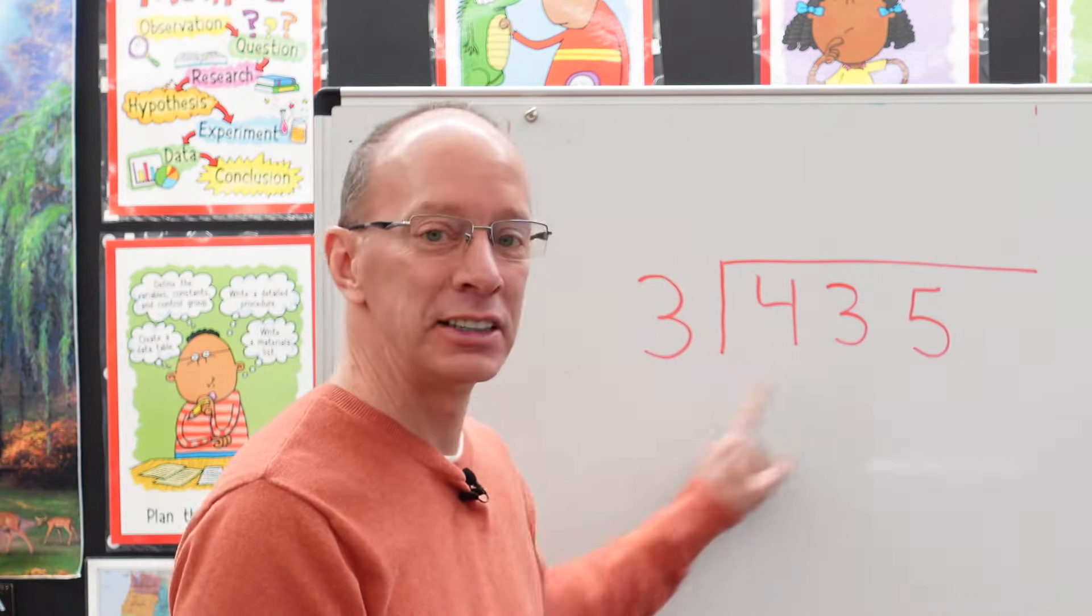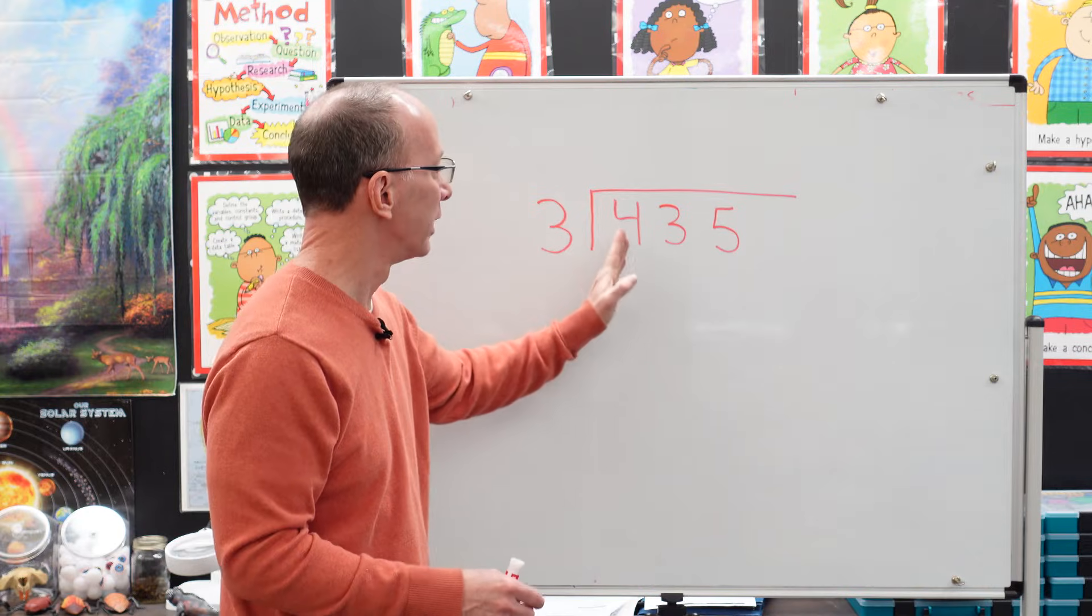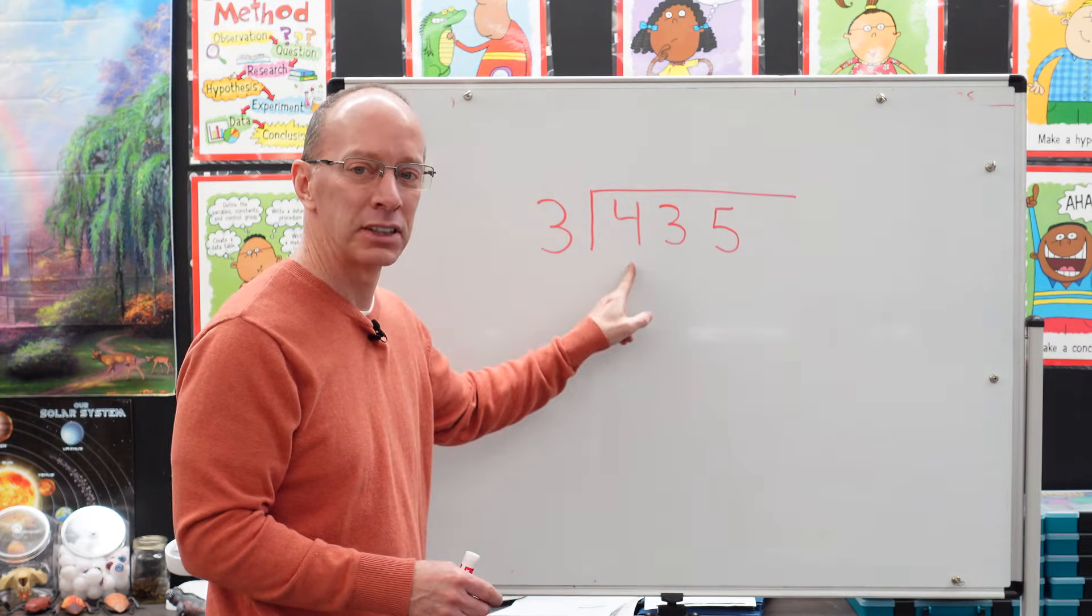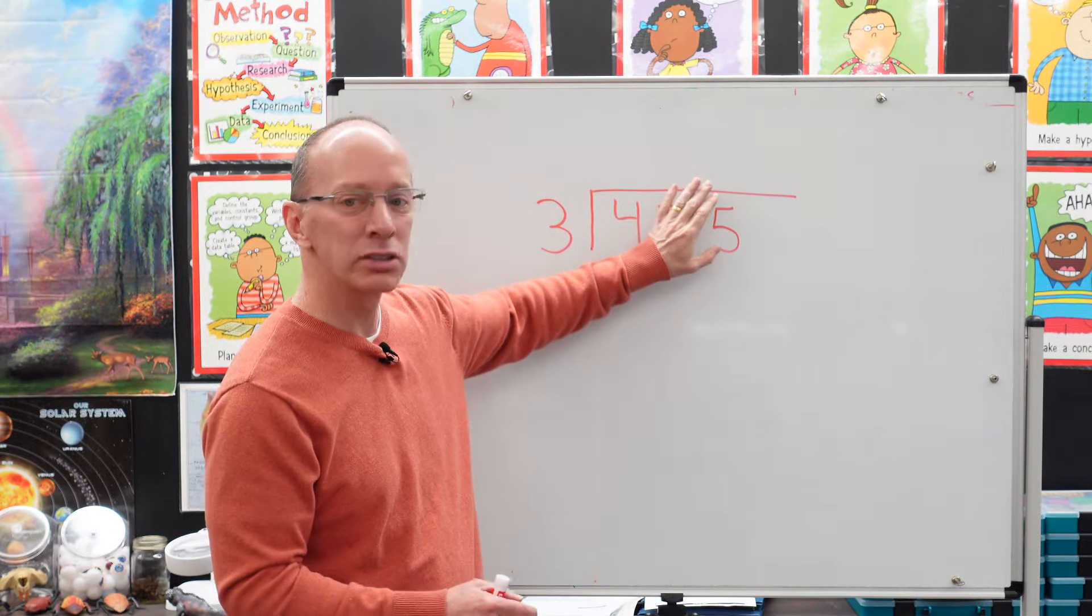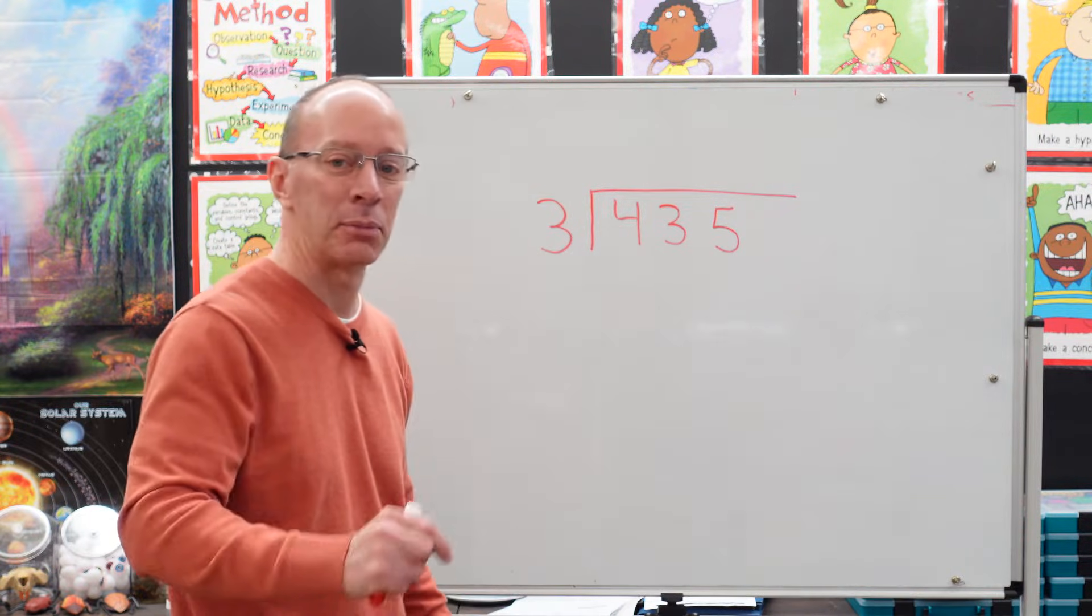I'm going to divide this number right here into three equal parts. So let's start from right here. We're going to start with this number right here. Don't worry about all those numbers. It gets a little confusing. Take it easy, cheesy, lemon squeezy, step by step.